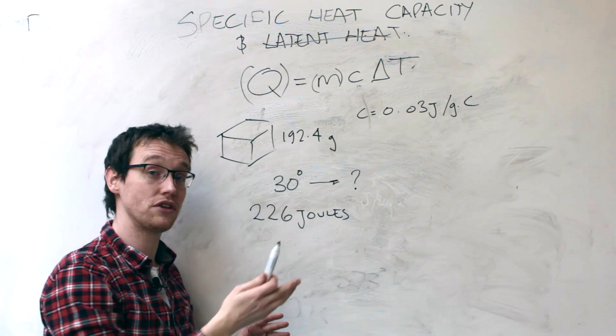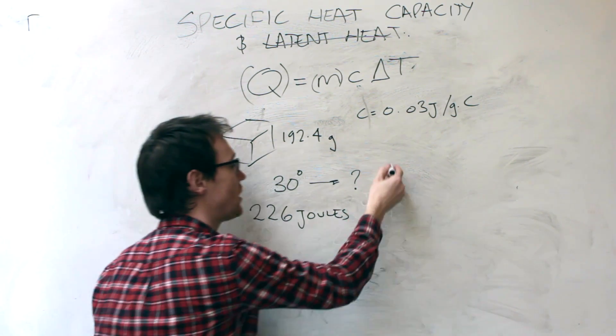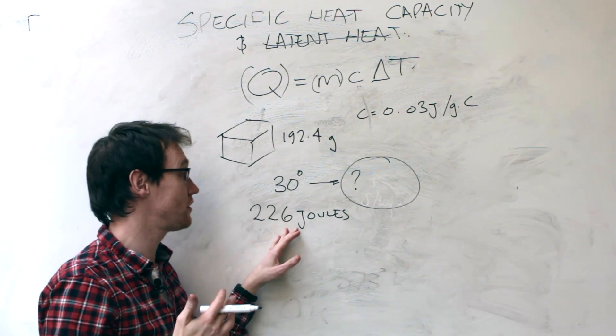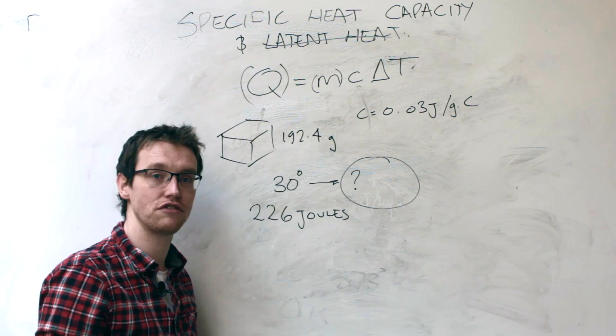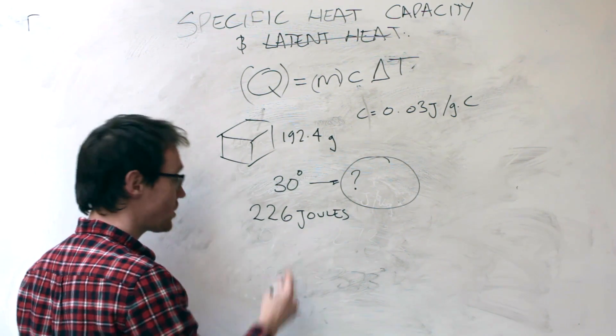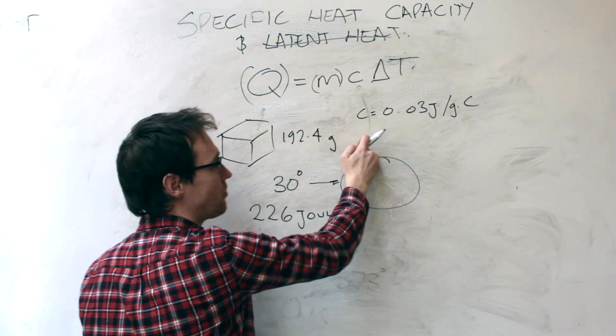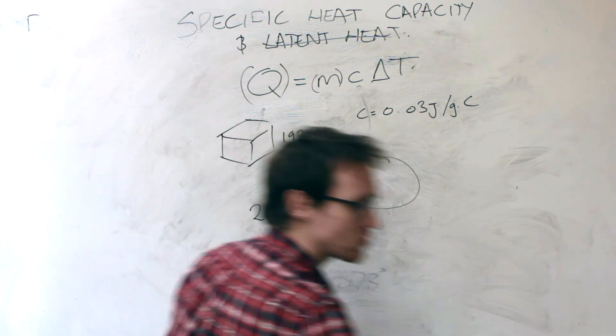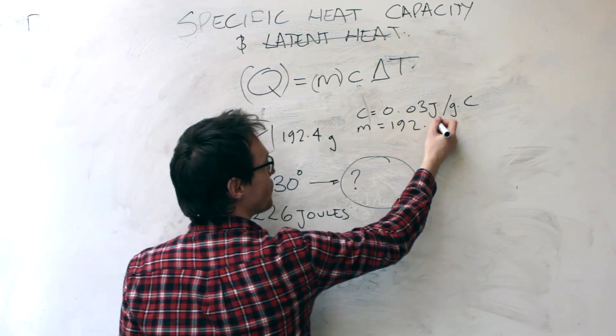So let's plug in some of these numbers. And what we're trying to do here is we're trying to find out, with the addition of 226 joules of heat, how hot did this thing get? So let's find that out. So instead of drawing it all over the place like this, I'm just going to state all my variables, and I encourage you to do the same. So let's state those variables. We know that the mass is 192.4 grams, we know that c is 0.03, and we're trying to find the change in temperature. That's what we don't know.